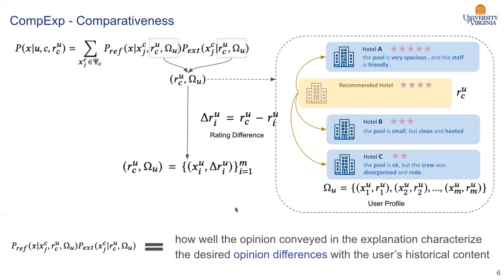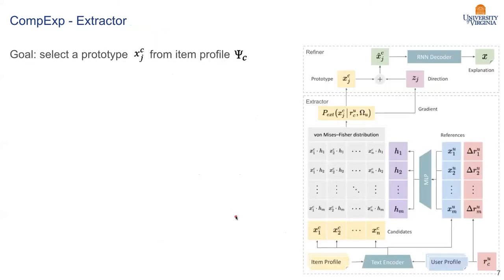Now, with this problem formulation, let's zoom into the model. At the right hand side is our actual model structure. As you can see, we have the extractor and the refiner. Since we have these two steps, let's first start with the extractor.